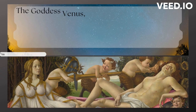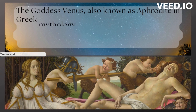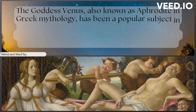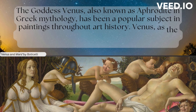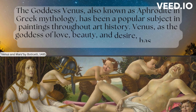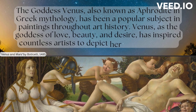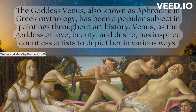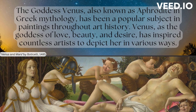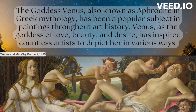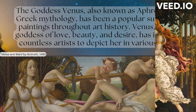The goddess Venus, also known as Aphrodite in Greek mythology, has been a popular subject in paintings throughout art history. Venus, as the goddess of love, beauty, and desire, has inspired countless artists to depict her in various ways.